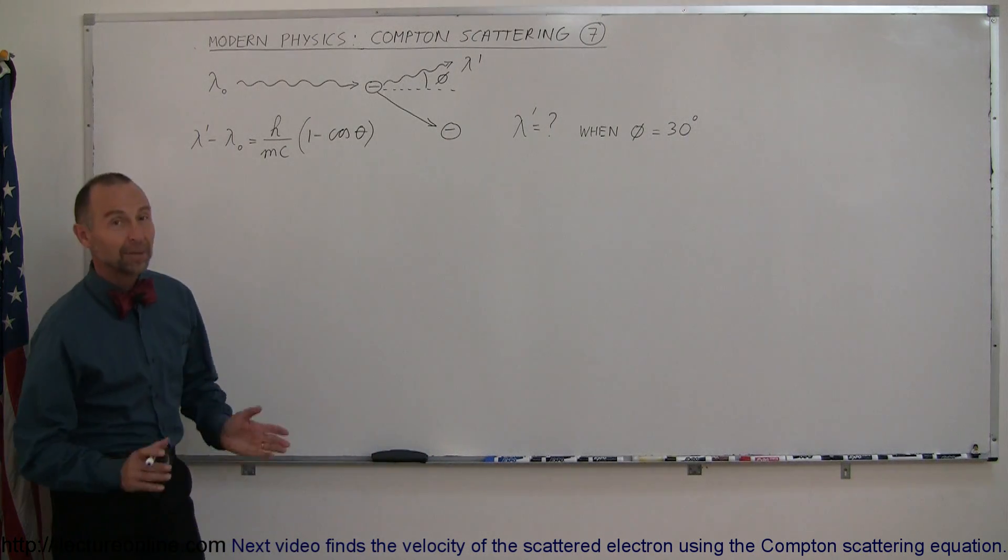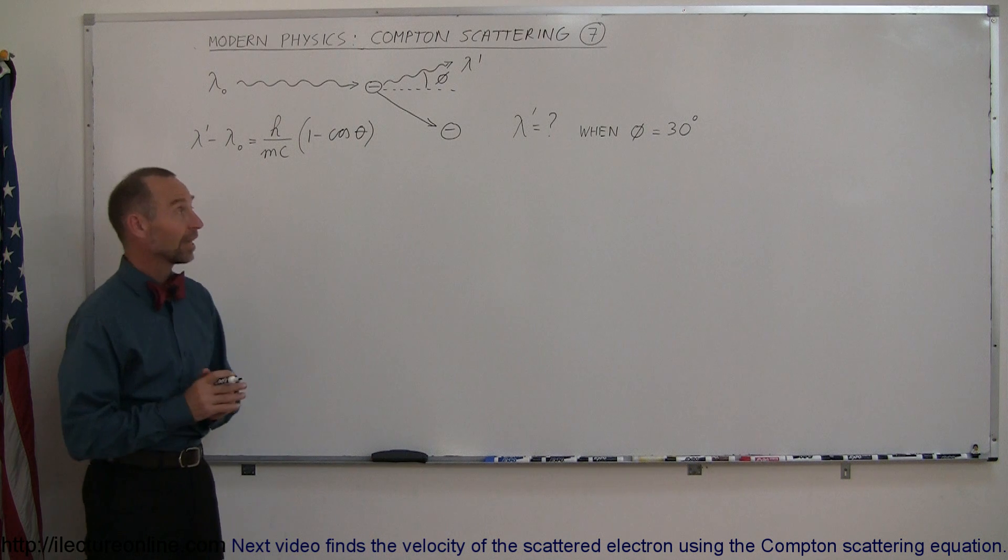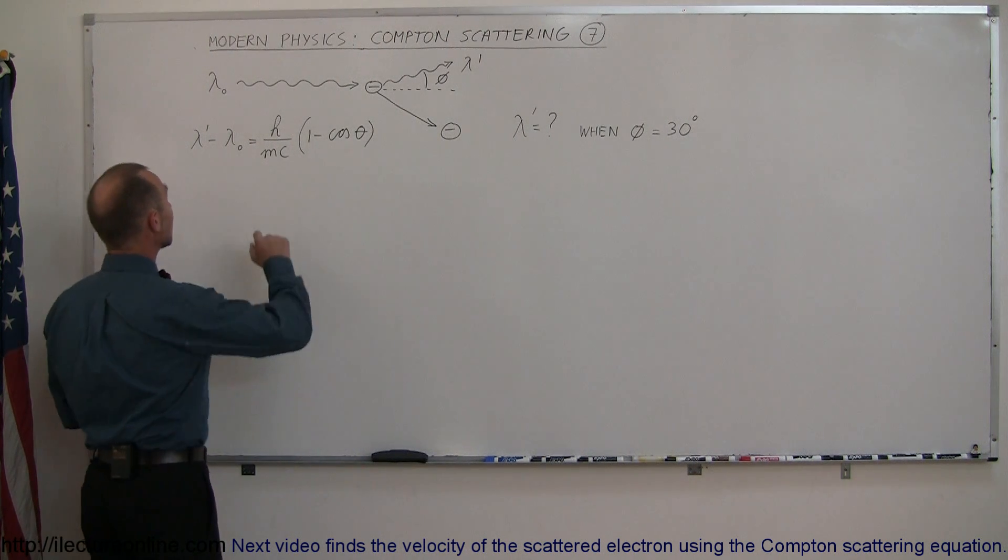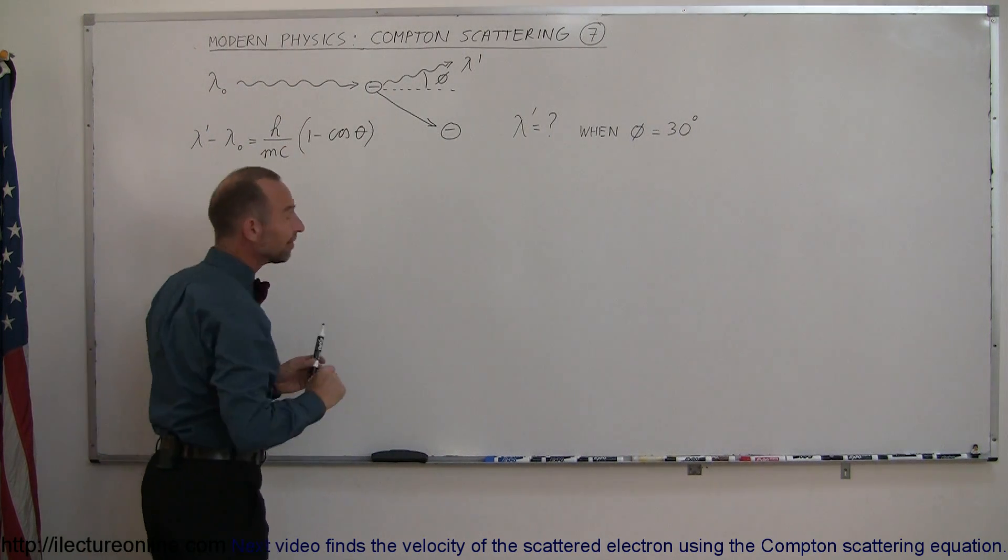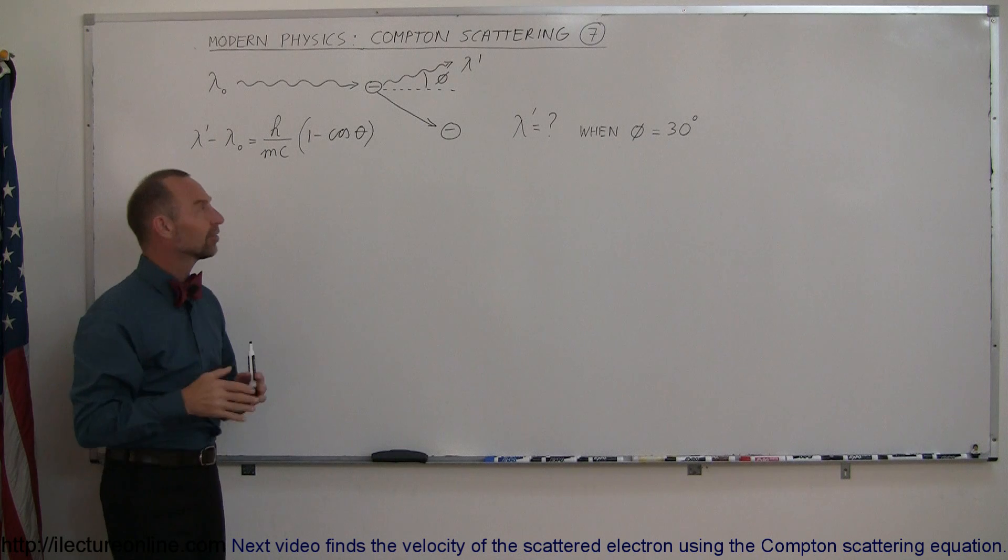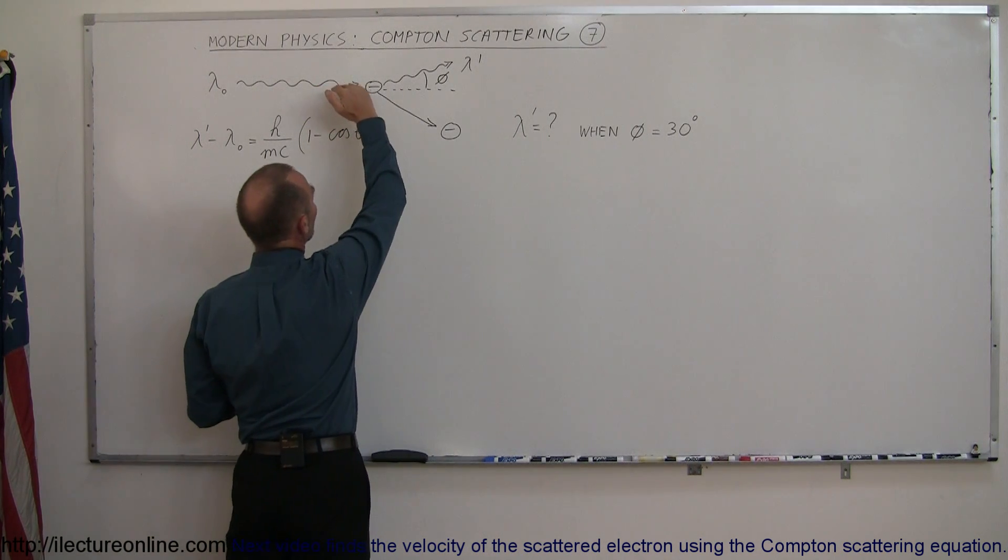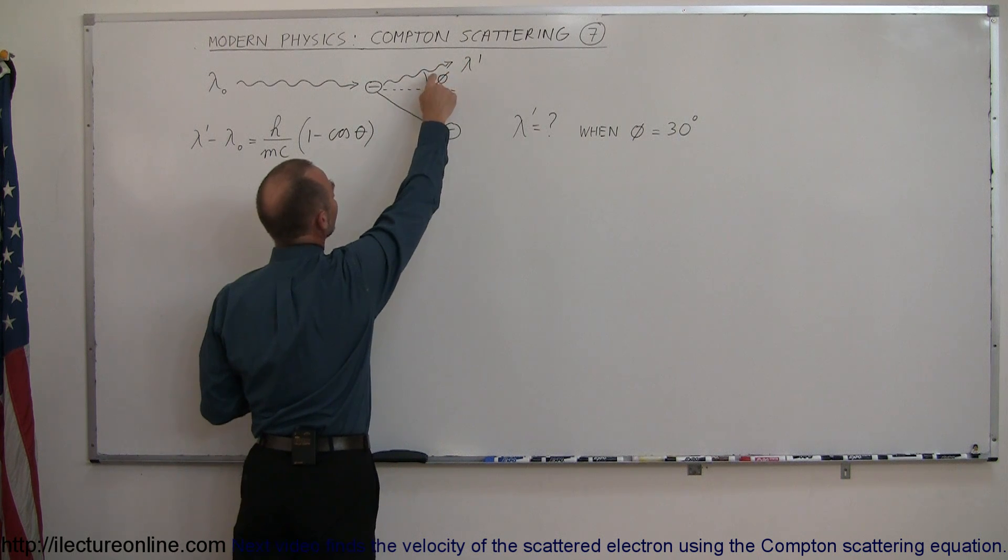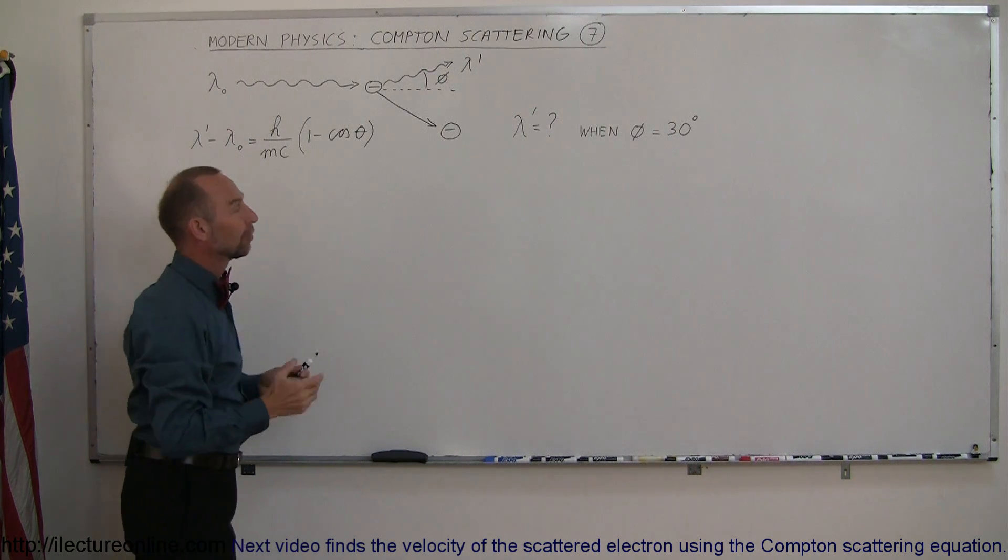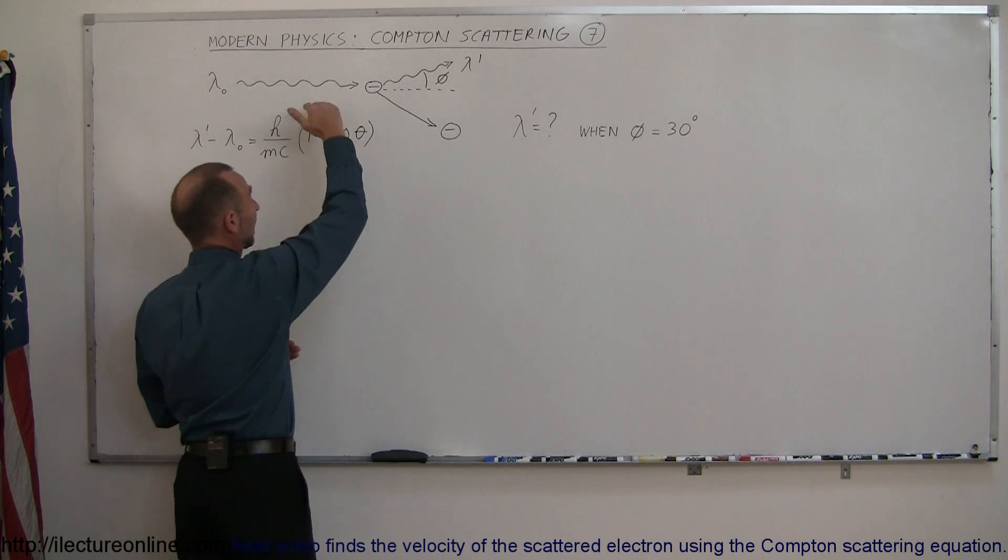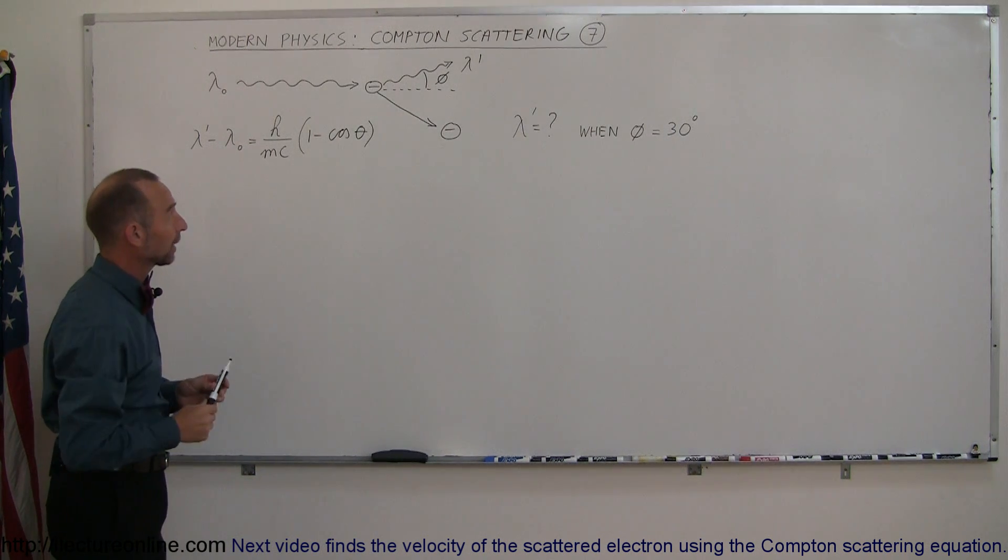Welcome to our lecture online. Our next topic in modern physics is Compton scattering. What is Compton scattering? They found out that when a very high energy photon is incident on an electron and collides with it, the photon scatters off at an angle—let's say phi—with respect to its original direction. When that happens, the electron will get hit and probably go in the opposite direction because of conservation of momentum, which we'll talk about later.